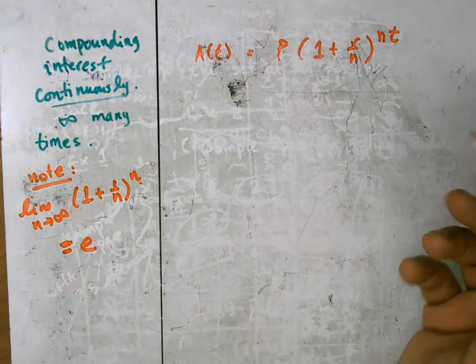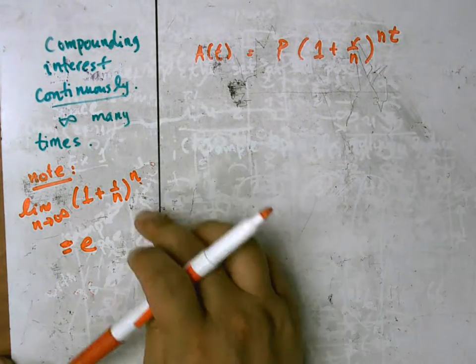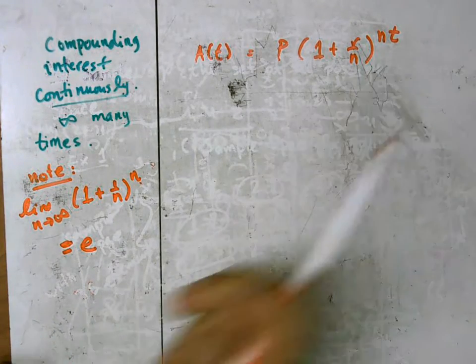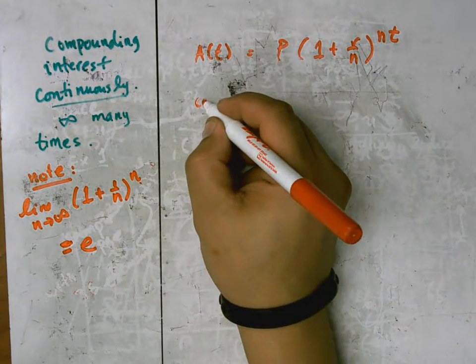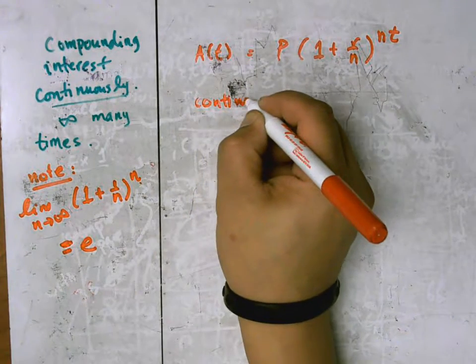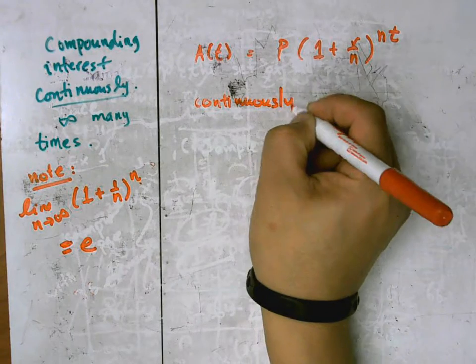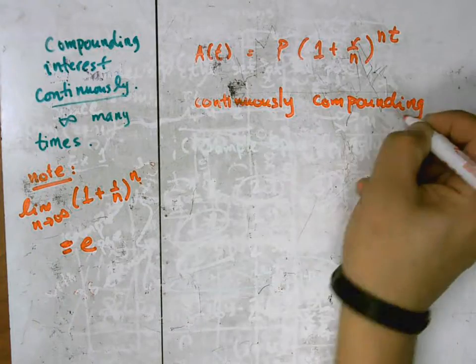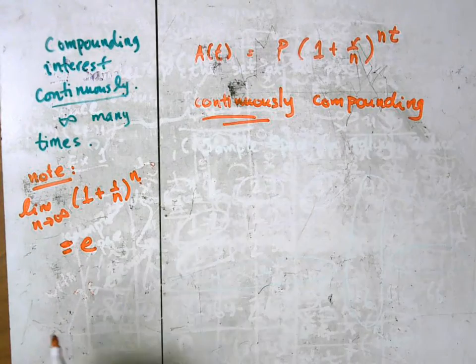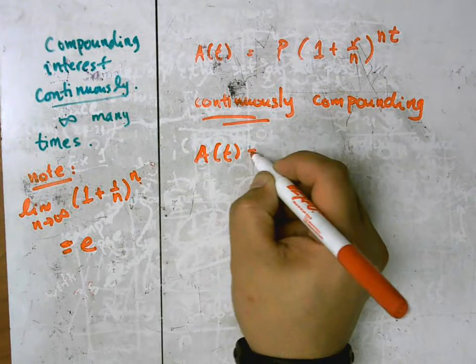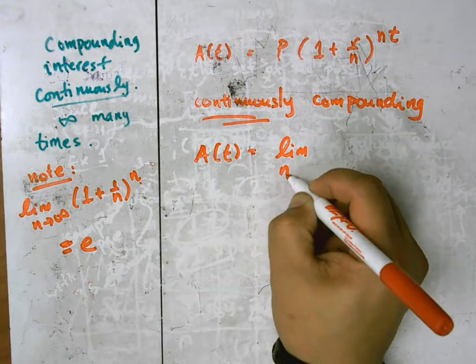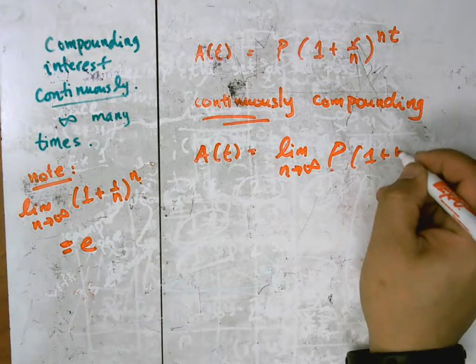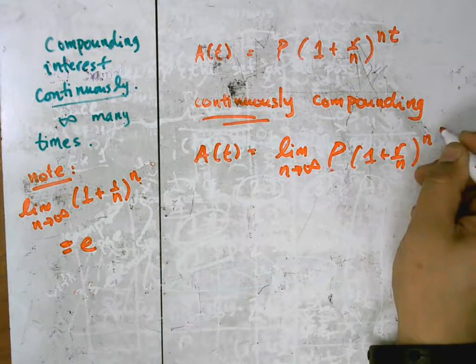But we can't just simply plug stuff in and just assume that it's right, because many times it will, in fact, be wrong. So we need to somehow rigorously develop this concept. So I'm going to say that for continuous compounding means for us to take the limit as n approaches infinity of p times 1 plus r over n to the nt.